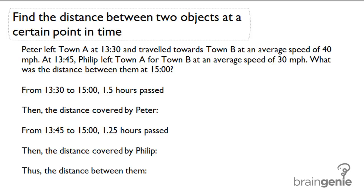At 13:45, Philip left town A for town B at an average speed of 30 miles per hour. What was the distance between them at 15:00?